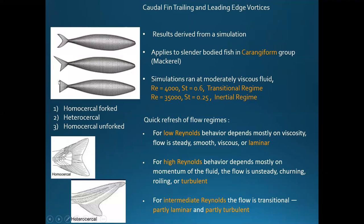Now let's look at our first study, which examines different tail designs and the leading edge vortices coming off of them. This is a simulation study that applies to carangiform swimmers — that first group after tuna. The simulations were run at two regimes: the transitional regime and the inertial regime, at Strouhal numbers of 0.6 and 0.25.